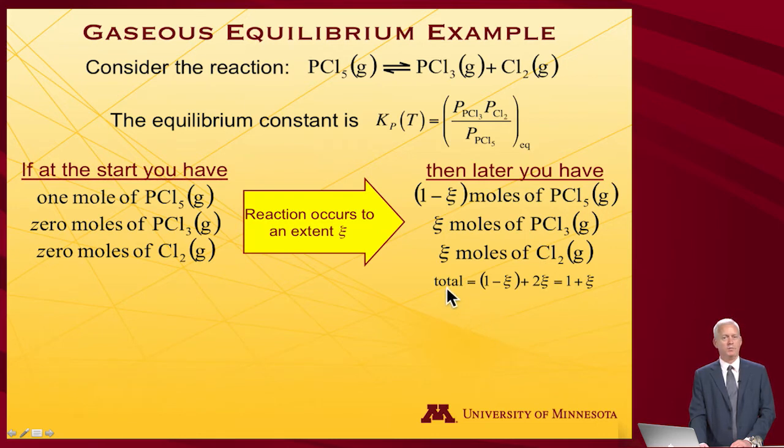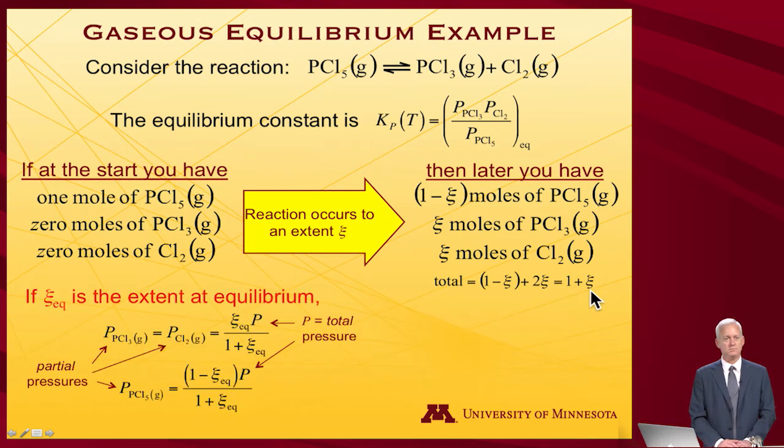So the total moles in the system will be (1 - ξ) of PCl5 plus two times ξ (one here and one here), so we'll have (1 + ξ) total moles. Now if ξ subscript equilibrium is the extent at equilibrium, so we let it go for a while until concentrations are no longer changing...